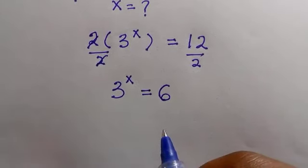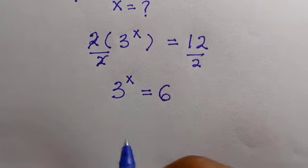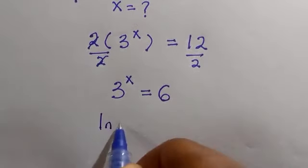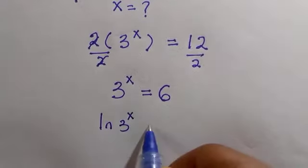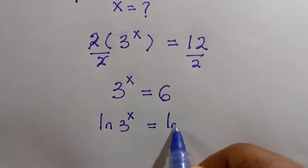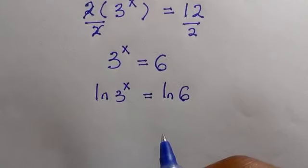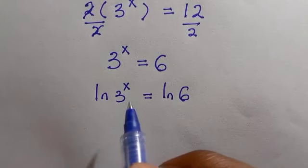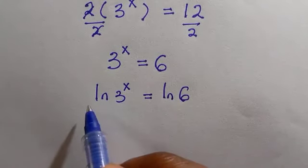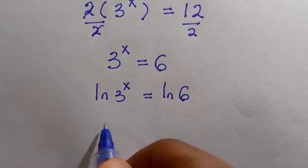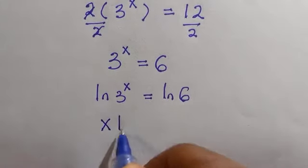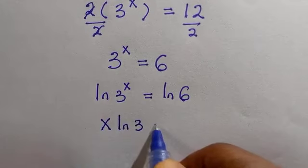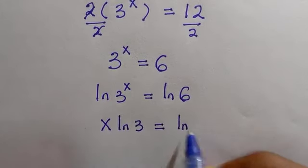To obtain the value of x, we are going to introduce natural logarithm, which is ln, to both sides. So here we have ln(3^x) equals ln(6). From the law of logarithm, the power of 3 will come to the base and we have x·ln(3) equals ln(6).